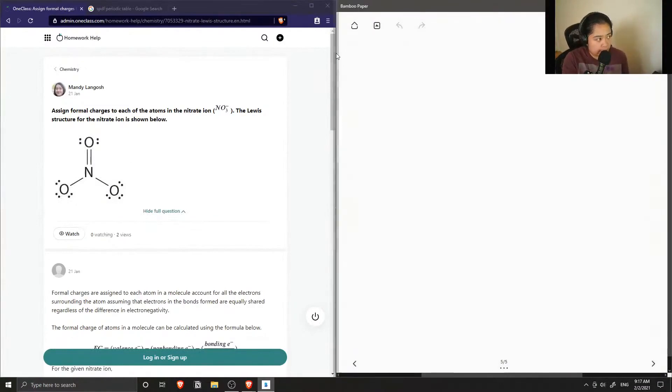Question number five is to assign formal charges to each of the atoms in the nitrate ion, which is NO3 minus. The Lewis structure for the nitrate ion is shown below. We already have the Lewis structure which saves us some time in drawing it, and we just need to calculate the formal charge of all of our atoms.